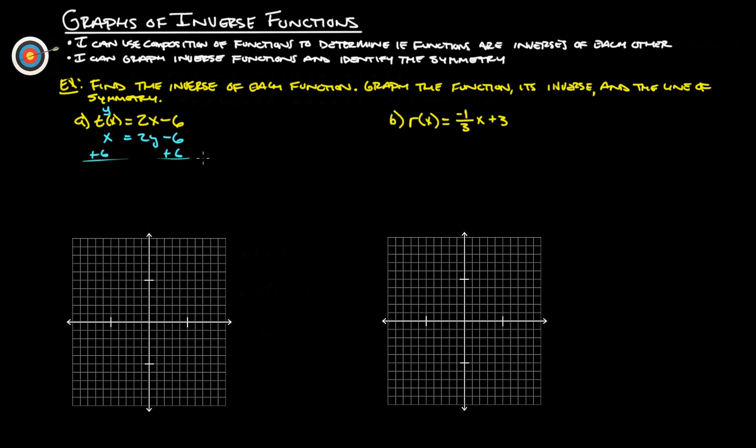So to solve for y, we add 6 to both sides. x plus 6 equals 2y. Divide both sides by 2. And we get y equals, let's do this. This is 1x plus 6 over 2. So 1 over 2, that's 1 half x, because 1x over 2 is the same as 1 half x. 6 divided by 2 is 3. So there's our inverse function.